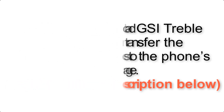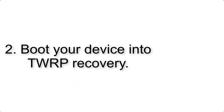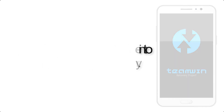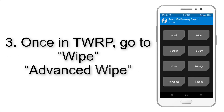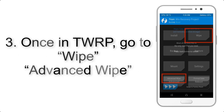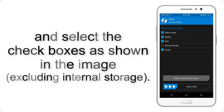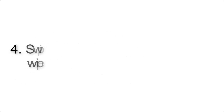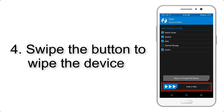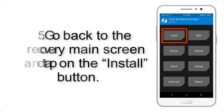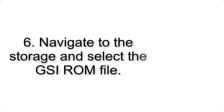Step 2: Boot your device into TWRP recovery. Once in TWRP, click on Wipe, then Advanced Wipe, and select the checkboxes as shown in the image, excluding internal storage. Step 4: Swipe the button to wipe the device. Step 5: Go back to the recovery main screen and tap on the Install button.